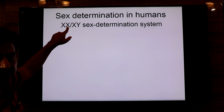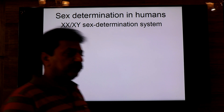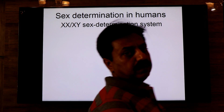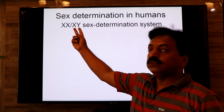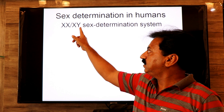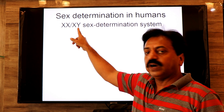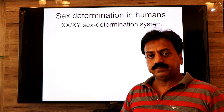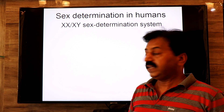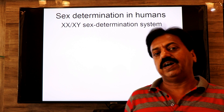But if a zygote receives two sex chromosomes where one is X and the other is Y — X comes from the mother and Y comes from the father — then the zygote with X and Y chromosomes will develop into a male.